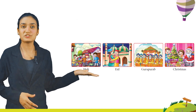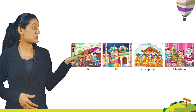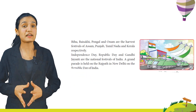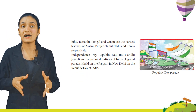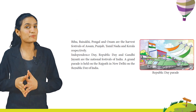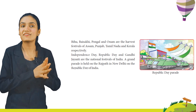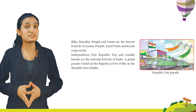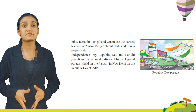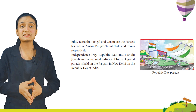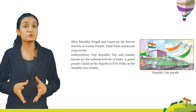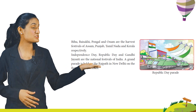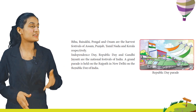Here you can see pictures of people celebrating Holi, Eid, Guru Purab, and Christmas. Bihu, Baisakhi, Pongal, and Onam are the harvest festivals of Assam, Punjab, Tamil Nadu, and Kerala respectively. Independence Day, Republic Day, and Gandhi Jayanti are the national festivals of India. A grand parade is held on the Rajpath in New Delhi on Republic Day.